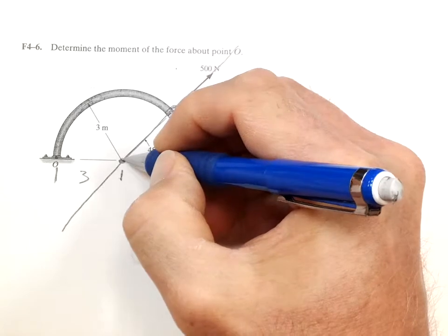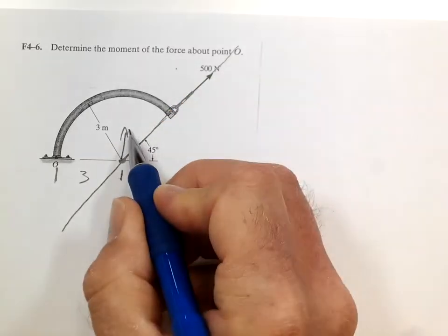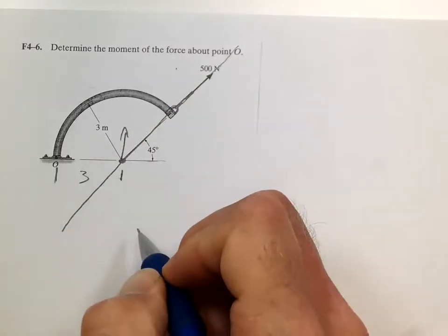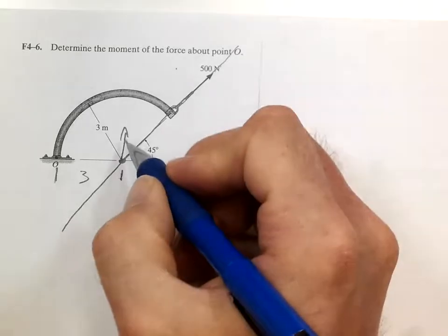So then we need the vertical component of that force. The horizontal component goes through O, so that doesn't matter. All we need is the vertical component.